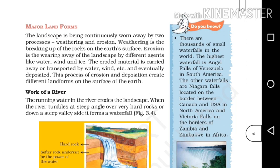The eroded material is carried away or transported by water, wind, etc., and eventually deposited. This erosion and deposition creates different landforms on the surface of the earth.